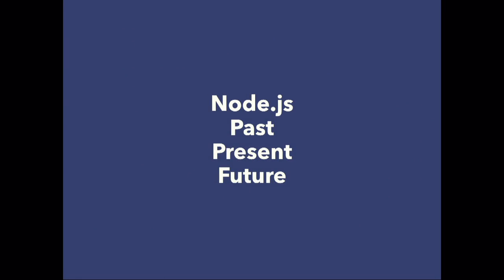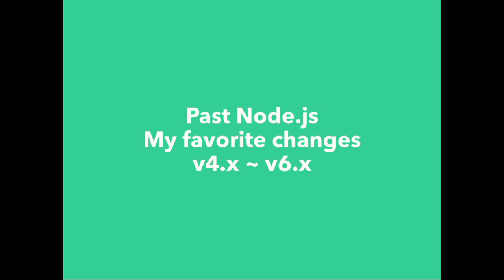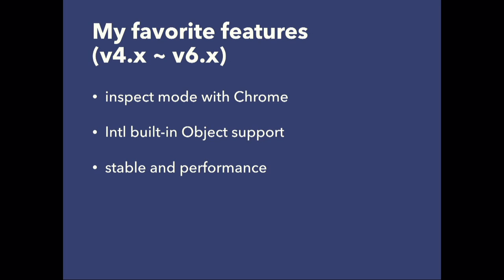Let's go forward to my talk. I'll introduce Node.js — past, present, and future. My slide has 17 pages and some demos. I'd like to introduce past Node.js features from v4.x to v6.x. Node.js has lots of features; these are just my favorites: Inspect Mode with Chrome, the Intl built-in object, stability, and performance improvements.